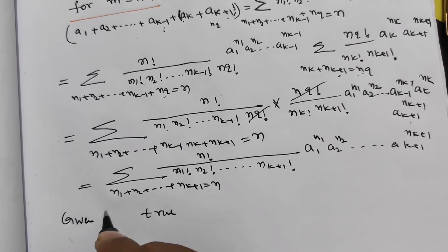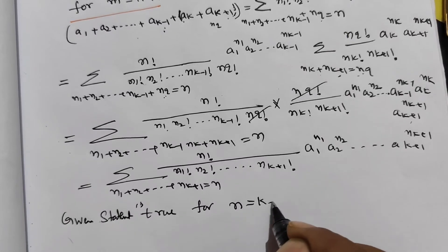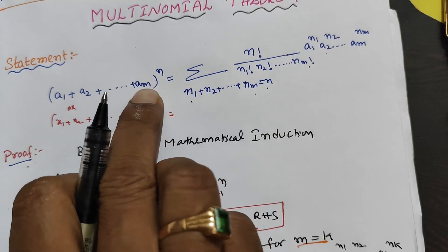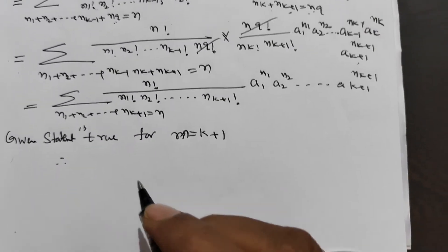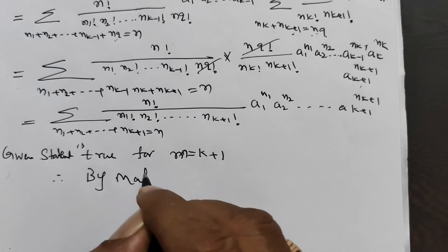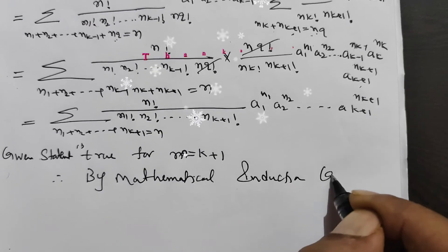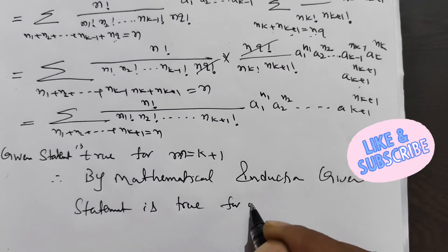Given statement is true for m = K+1. Therefore, by mathematical induction, the given statement is true for all values of n. The proof is complete.